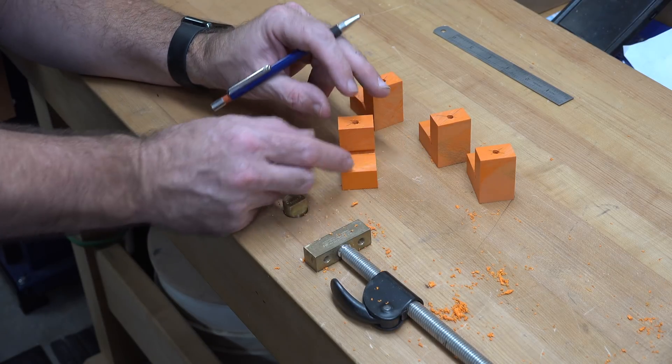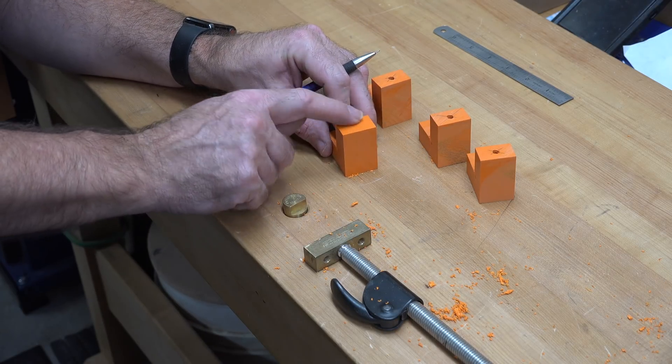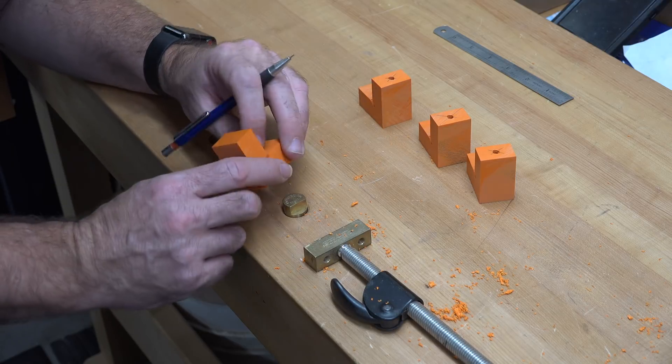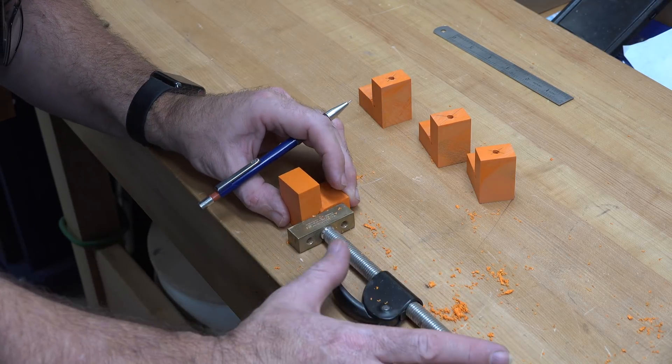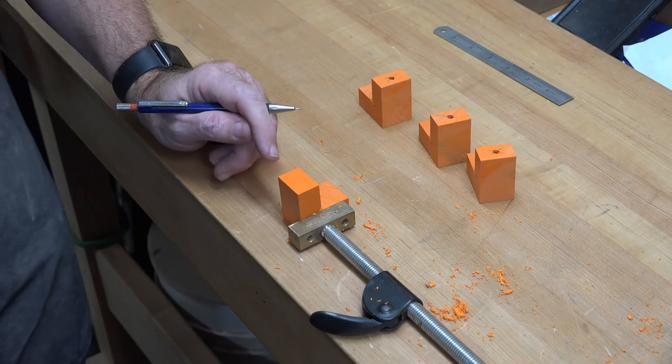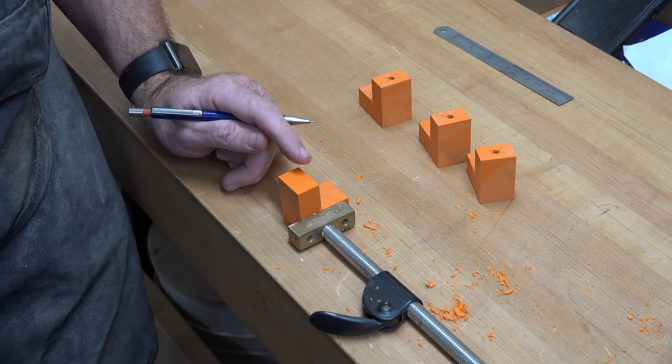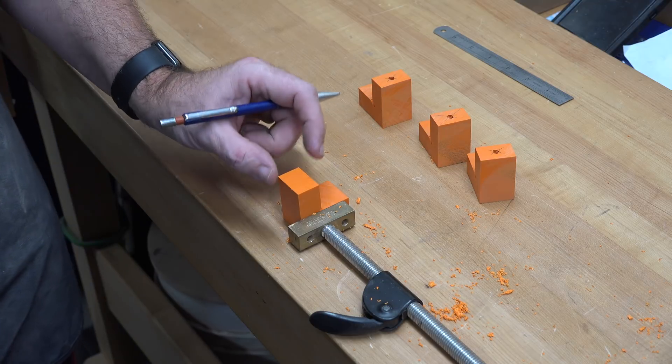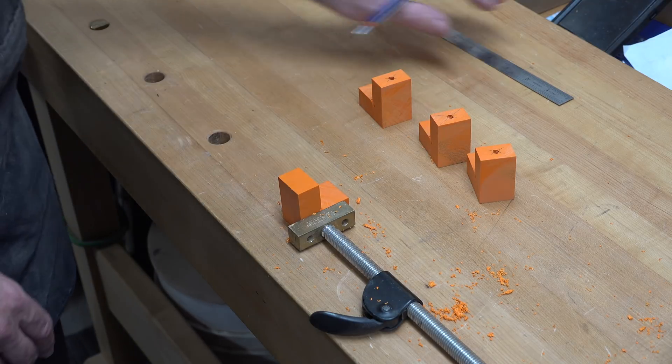We're now turning our attention to the other leg. Just like we did on the first side, we're going to mark the center and drill a 9/32 diameter hole, but it's going to be a through hole all the way through the length of this leg.